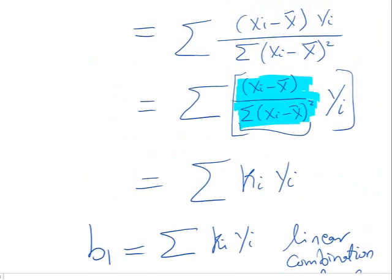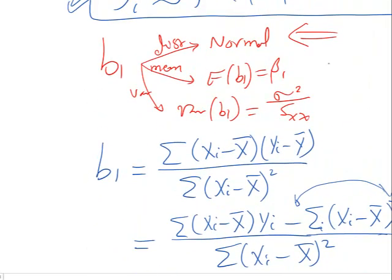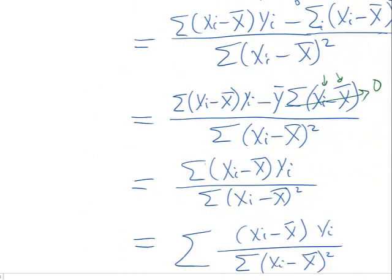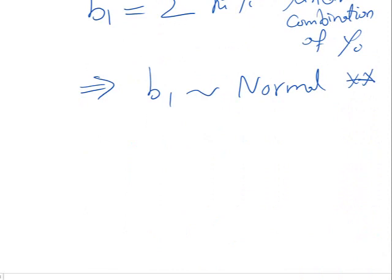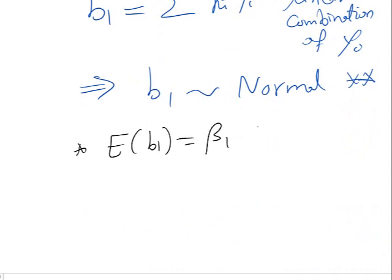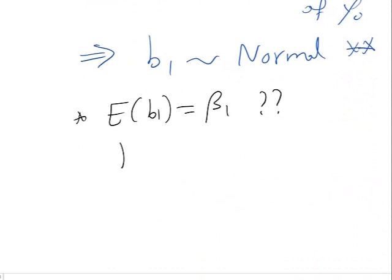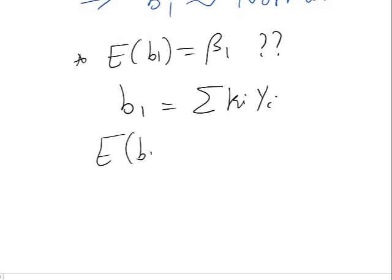The second thing we want to show is that the mean of b₁ equals β₁ — that is, b₁ is an unbiased estimator of β₁. We start with b₁ = Σ kᵢyᵢ, so E[b₁] = E[Σ kᵢyᵢ].